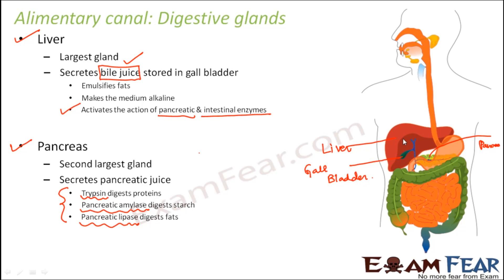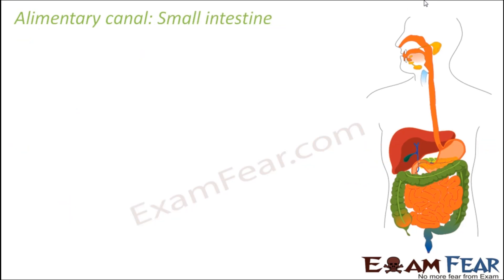The liver is connected to the gallbladder, and bile juice reaches the duodenum through the bile duct. Similarly, the pancreas is connected to the intestine, and pancreatic enzymes also enter the duodenum through the pancreatic duct. At the region where food passes from the stomach into the intestine, both pancreatic enzymes and bile juice join, making the environment alkaline and activating the pancreatic enzymes so digestion can continue.